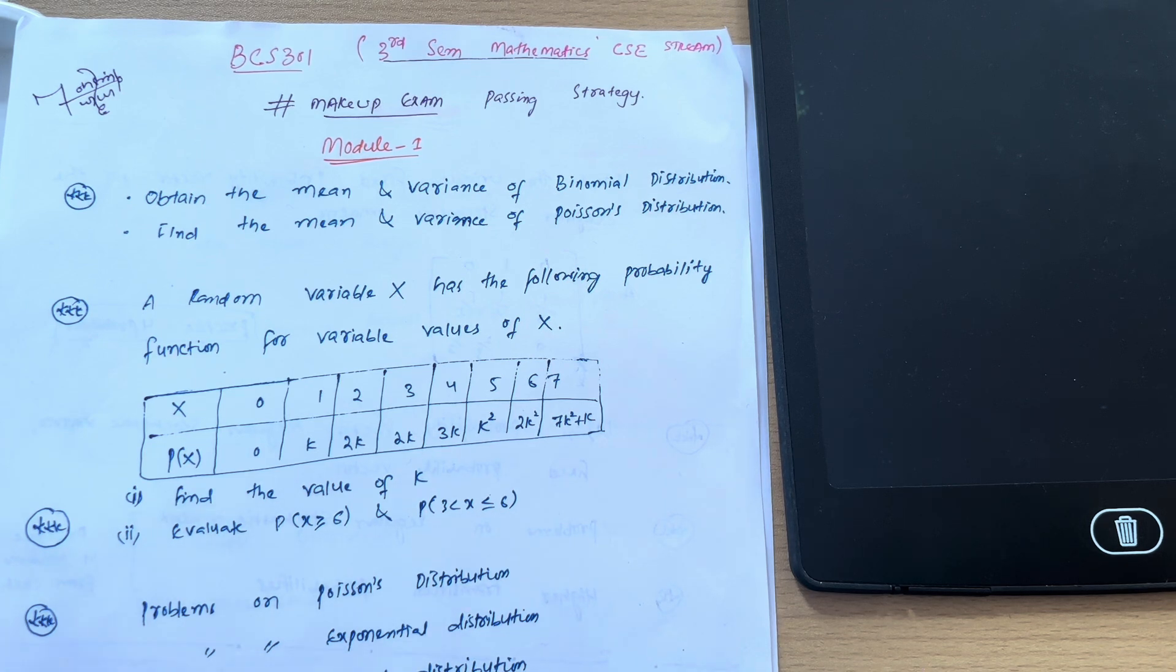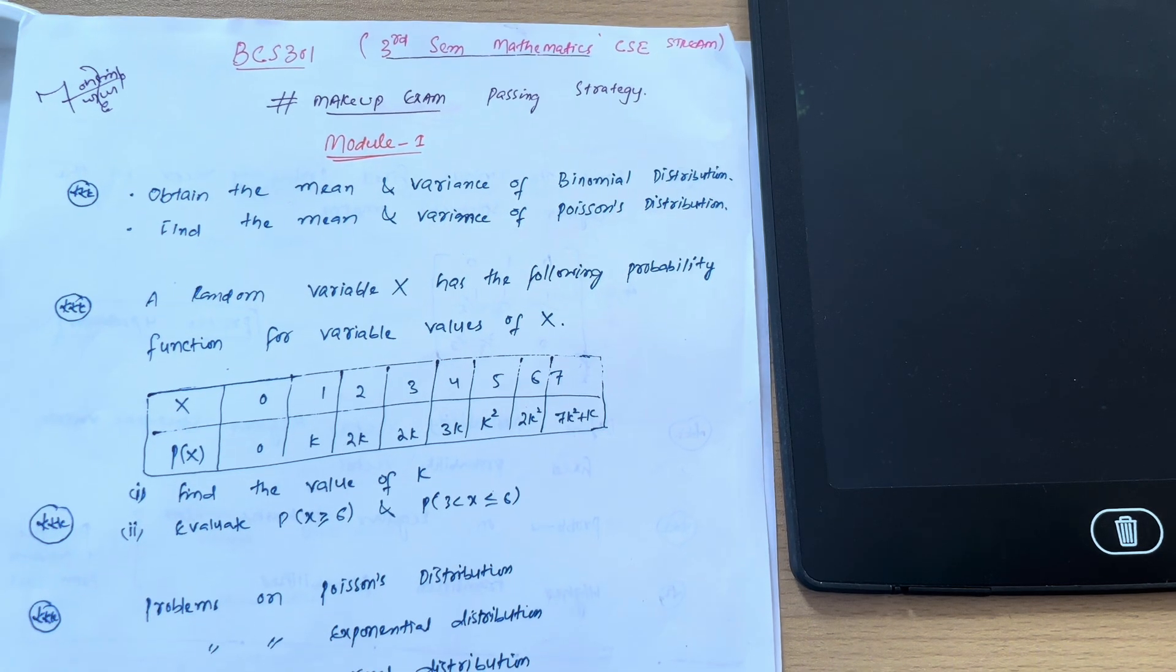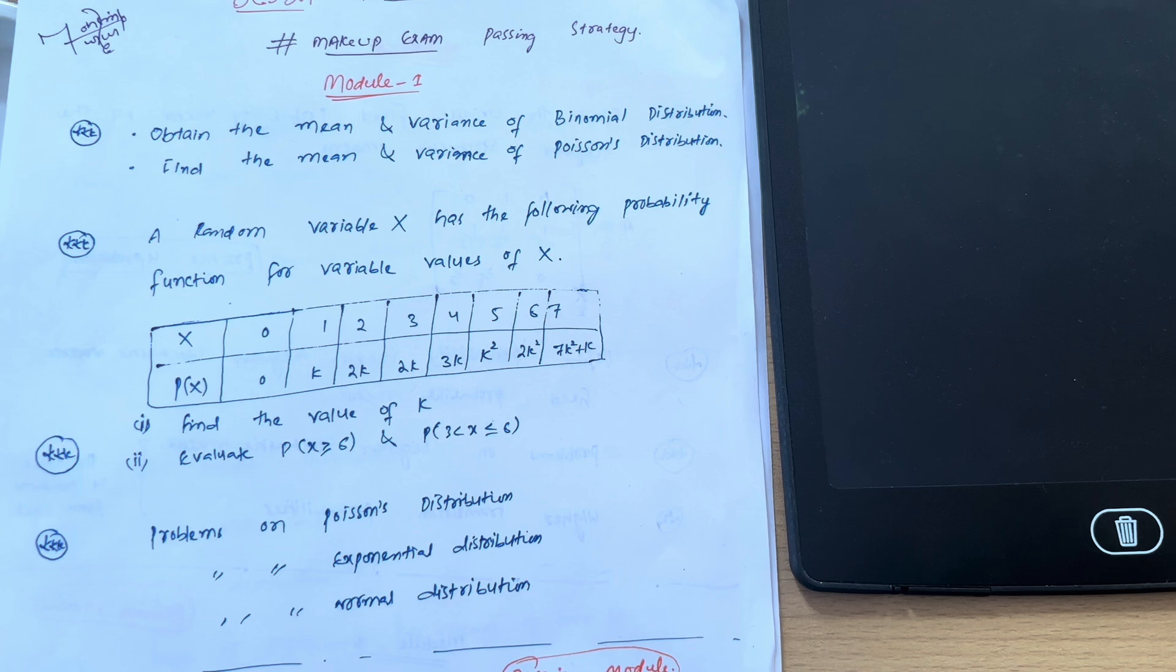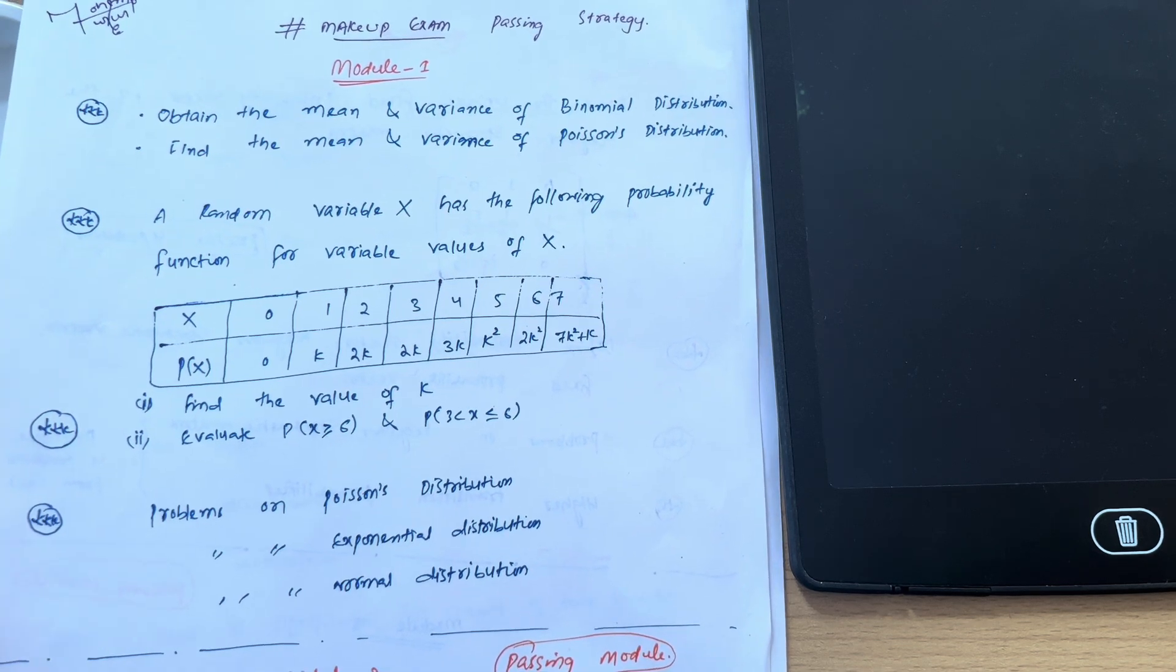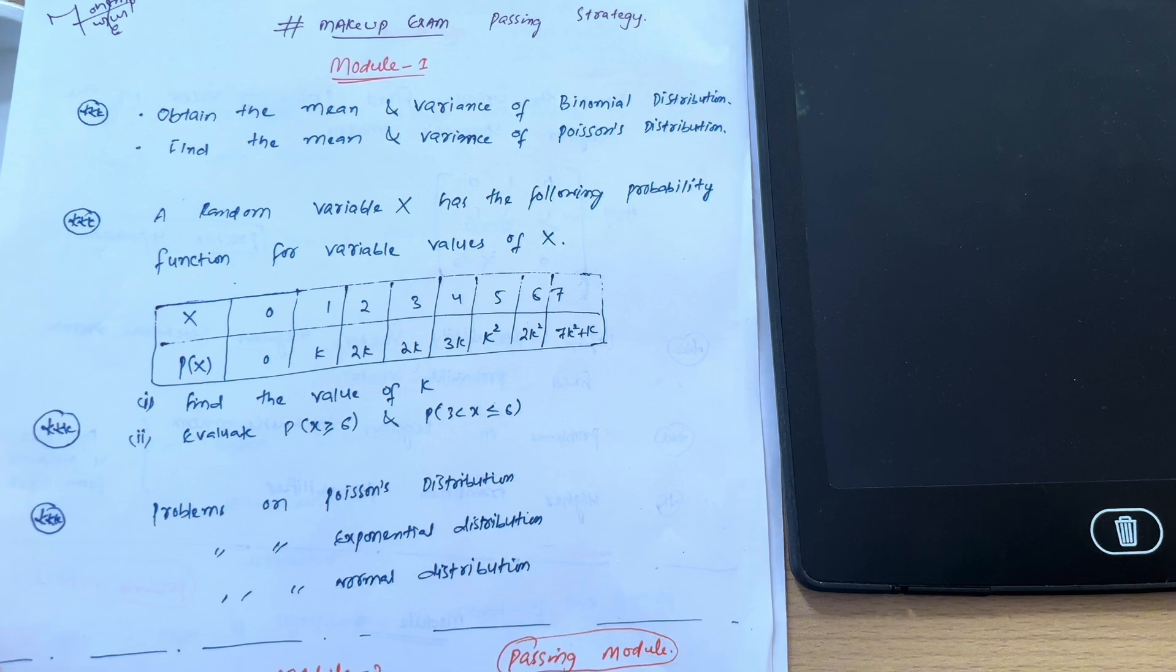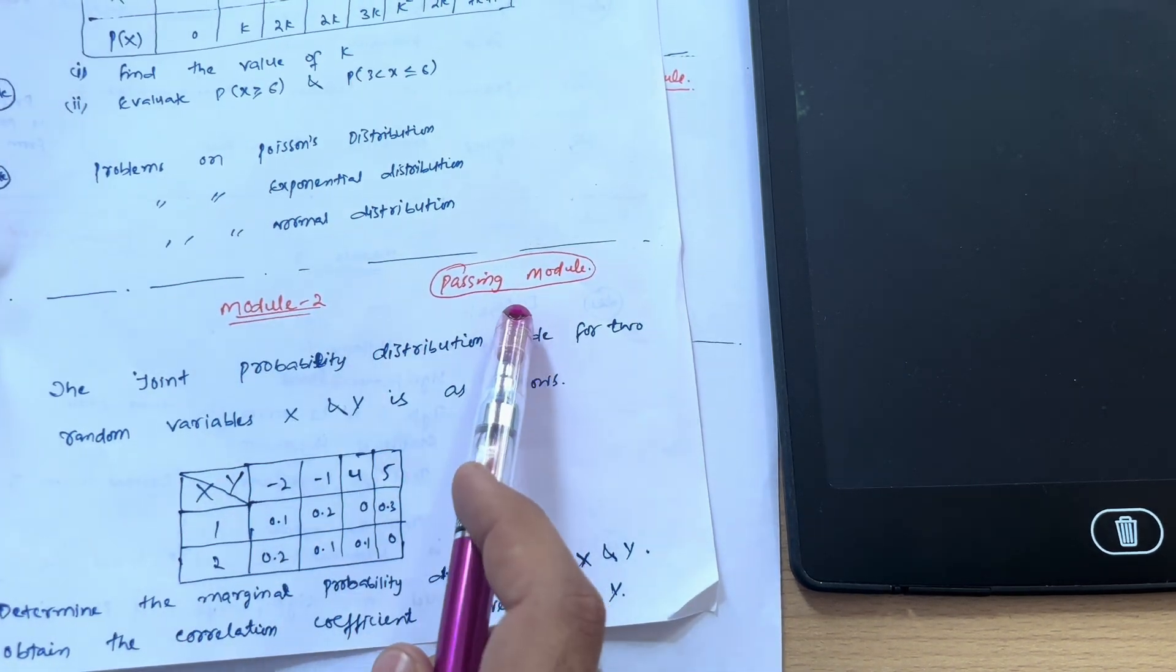I am here to discuss some passing strategies for the mathematics subject so that you will find easiness, as most of the students have backlogs in this subject. If you want to pass, then there is a strategy: you have to go through three modules fully.